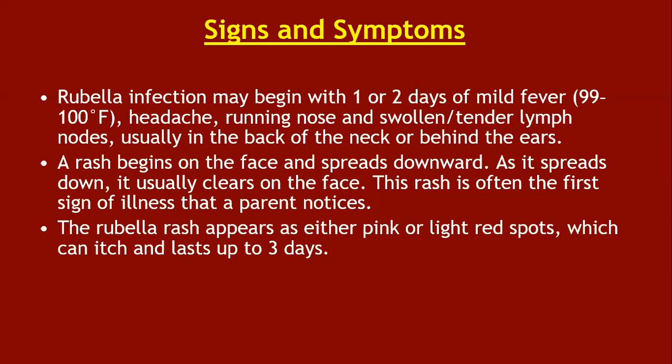Swollen and tender lymph nodes, typically at the back of the neck and behind the ears, distinguish rubella from measles. The rash begins on the face, spreads downwards, and clears the face as it descends; it is often the first sign of illness a parent notices. The rash is much fainter than that of measles and of shorter duration. Rubella rash appears as pink and light red spots which can itch and last for up to three days.